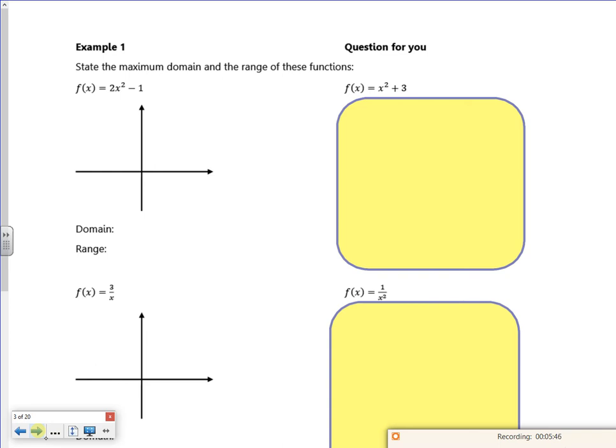I've got 2x² - 1. State the maximum domain and the range. 2x² - 1 is a U-shaped graph that goes down to minus 1. In terms of its domain, it can be any x value that I want, so I can say that x belongs to the real numbers.